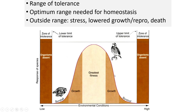Depending on what conditions we're looking at, this can fit many different things — the amount of lead in the water, the amount of oxygen available. Typically we see a curve where there's a Goldilocks situation in the middle with the greatest fitness, and if you have too much or too little, you start to see stress outside that range.